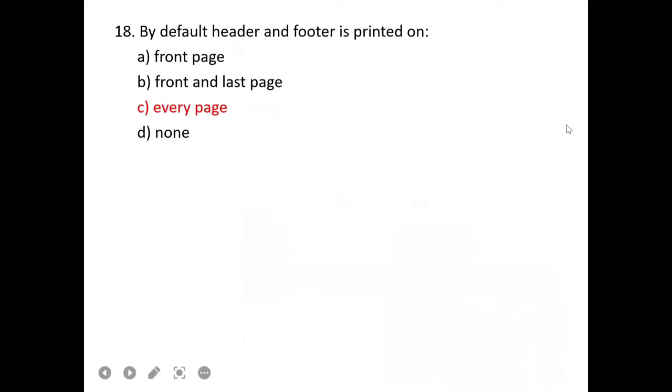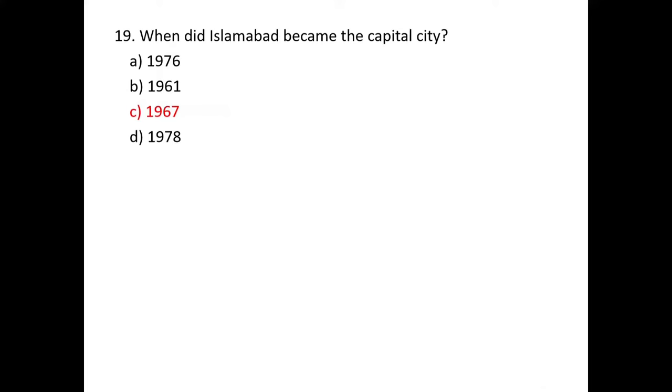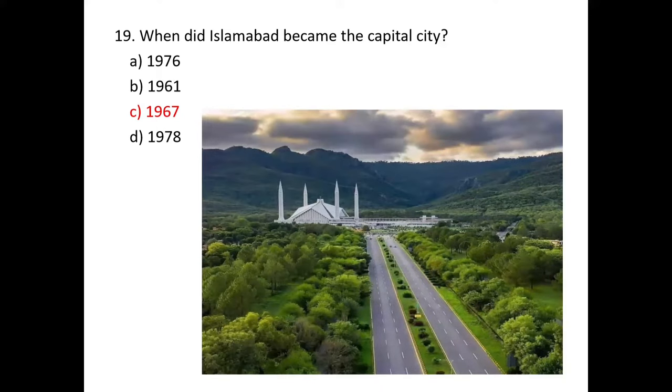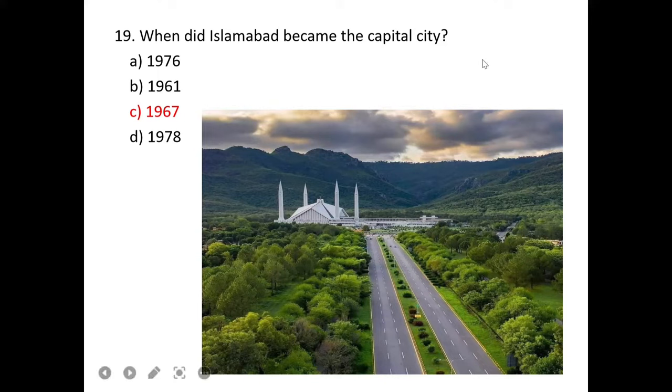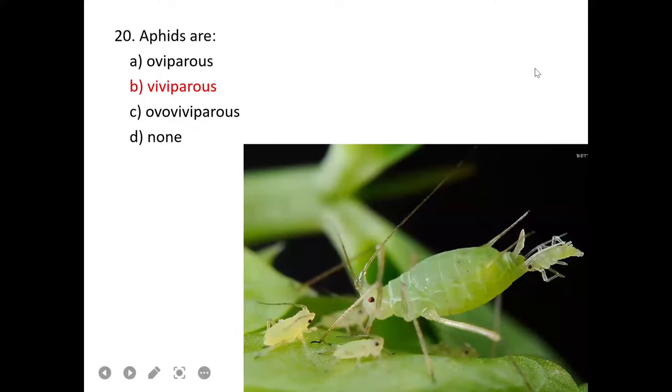Annelids have circulatory system which is closed type. Annelids have vessels, dorsal and ventral, and their circulatory system is closed type. The mutation which makes the codon stop codon is a nonsense mutation, which actually stops the translation of protein.